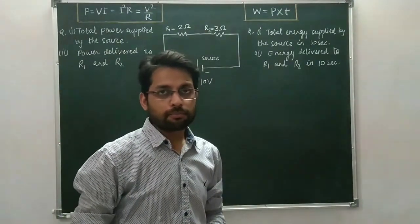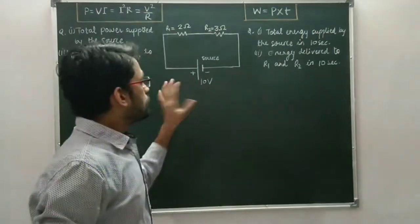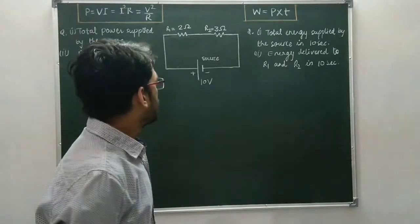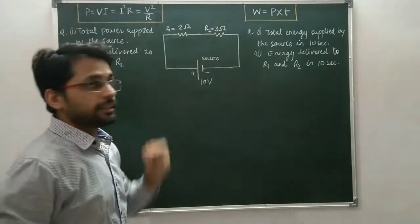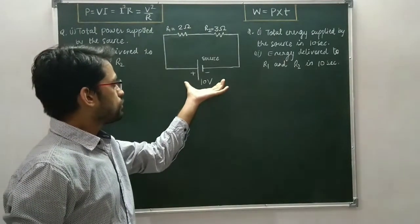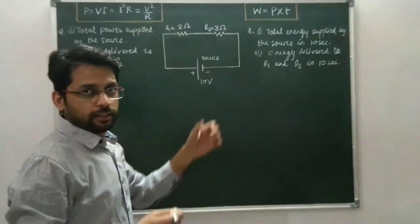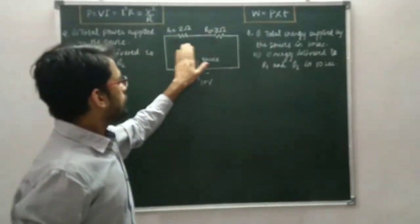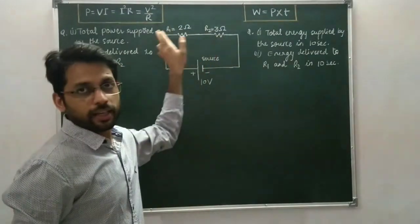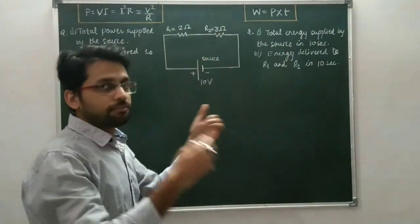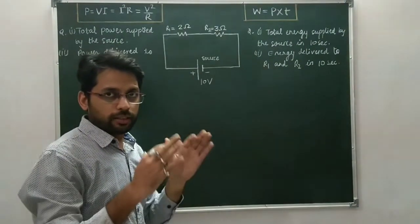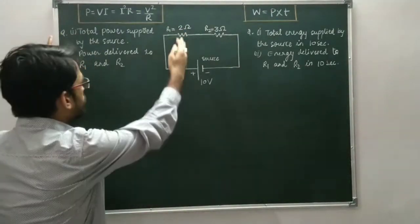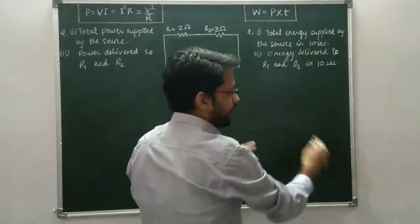Now come to this numerical. This numerical consists of a lot of things, so please be attentive. First, look at the circuit diagram. The circuit diagram consists of a source that is supplying energy or power to the circuit, and the circuit elements — two resistors — receive that energy and power in a certain amount of time. This portion belongs to power and this portion belongs to energy.